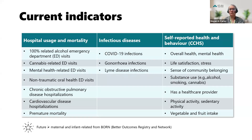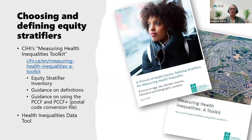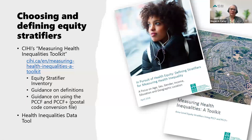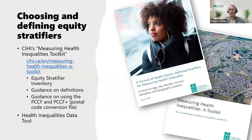We're currently working on maternal and infant related indicators from BORN. When choosing equity stratifiers, we knew we wanted sex and gender, if available, to be a stratifier, and we also wanted it to intersect with other stratifiers, allowing for intersectional analysis and sex- and gender-based analysis. We made heavy use of CIHI's Measuring Health Inequalities Toolkit, which includes an equity stratifier inventory and explains which equity stratifiers are available in specific data sources. We also used guidance documents on defining equity stratifiers and on using postal codes to define area-based measures.